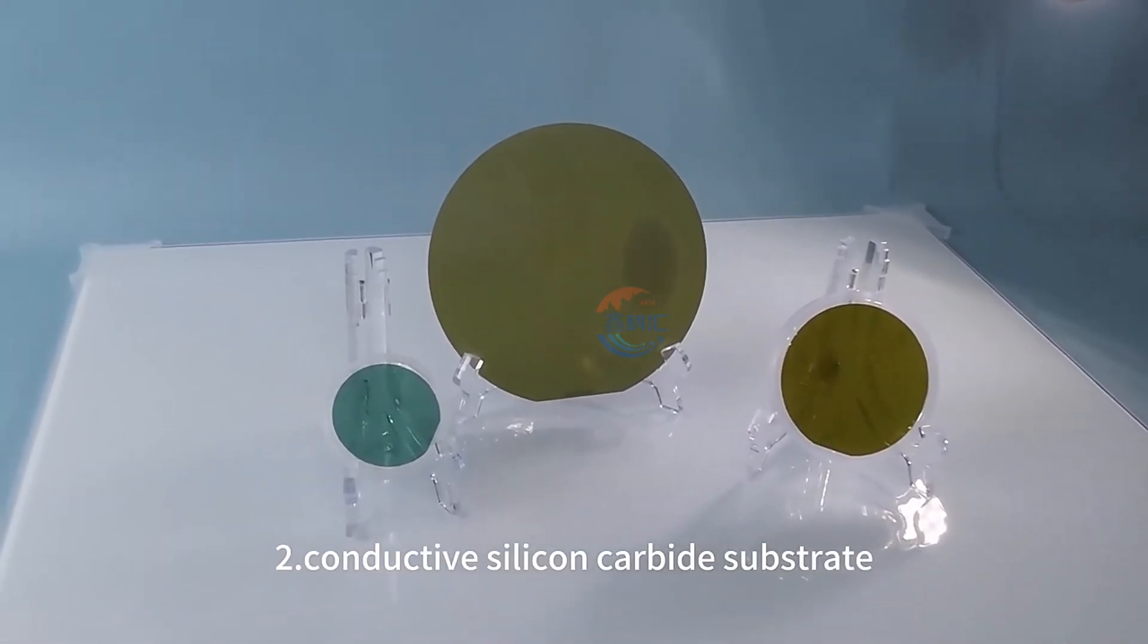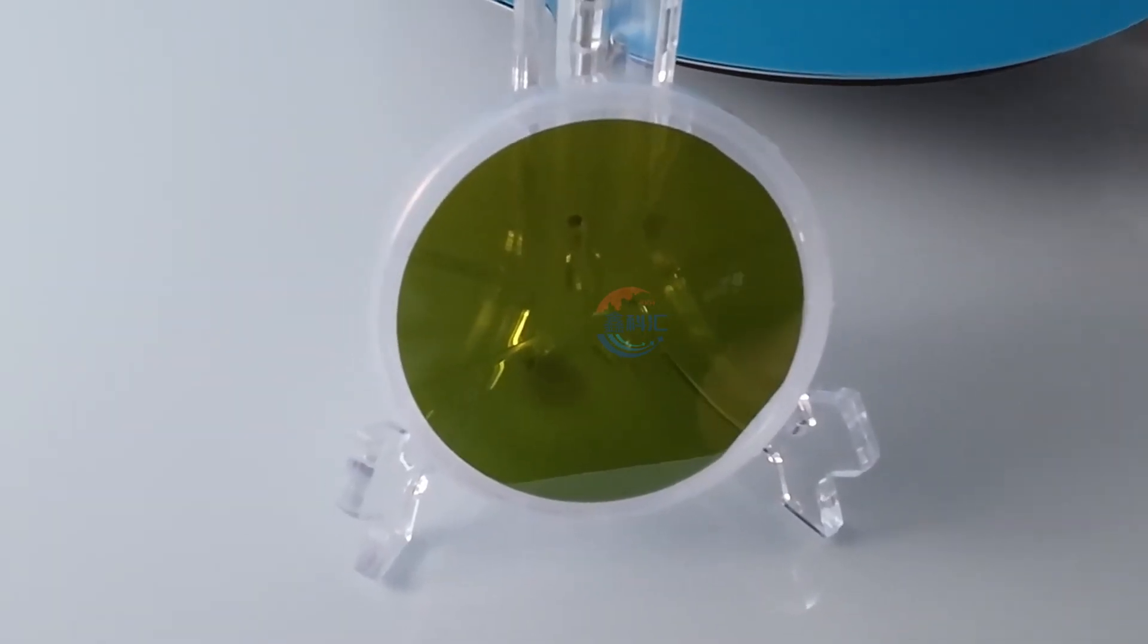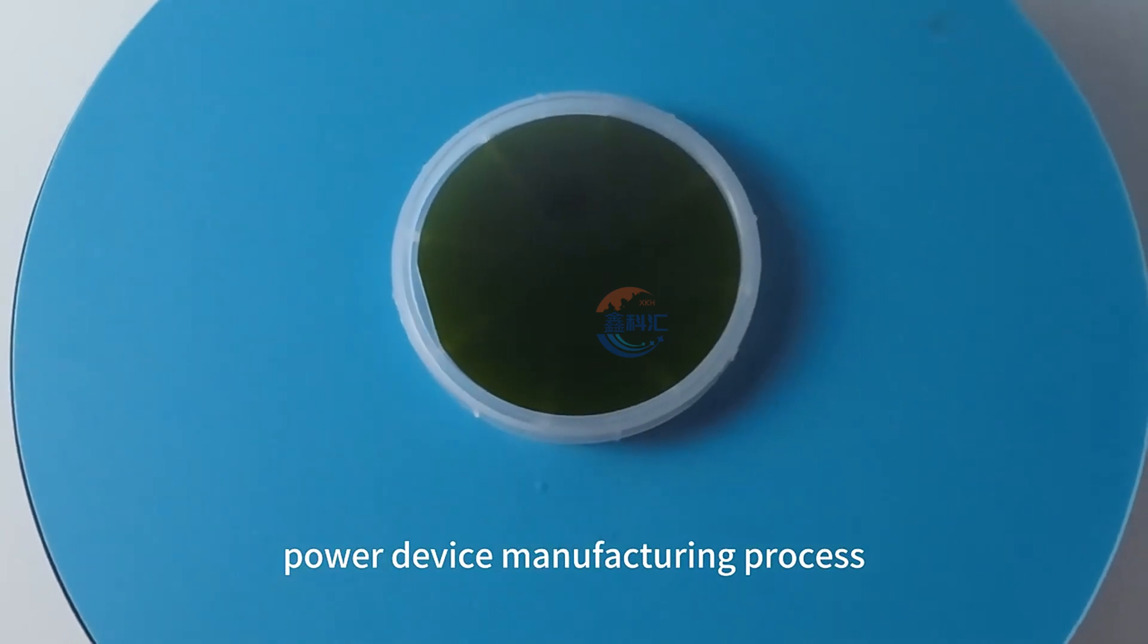Conductive silicon carbide substrate is mainly used in the manufacture of power devices. Different from the traditional silicon power device manufacturing process.